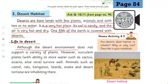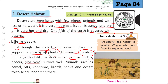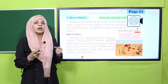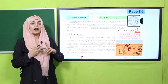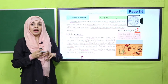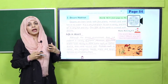Life in desert. Although the desert environment does not support a variety of plants, succulent plants with the ability to store water survive well. Succulent plants woh hote hain jinke andar paani store karne ki ability hoti hai, jaise cactus, acacia, aloe vera. Animals such as camel, rats, kangaroo, lizards, snake and desert tortoise are inhabiting there. Kaun kaun se animals aur plants desert mein rehte hain? Plants woh wale hote hain jinke andar water storage ki ability hoti hai - succulent plants like cactus, aloe vera and acacia. Animals: camel, rats, snakes, tortoise, kangaroos and lizards - these types of animals live in deserts.